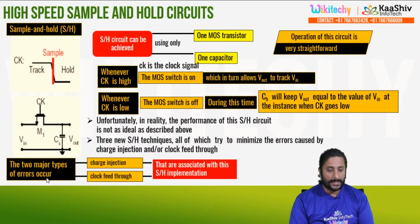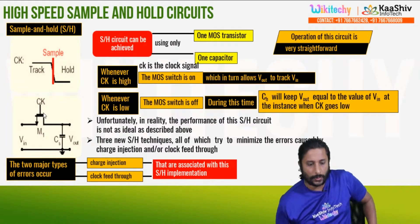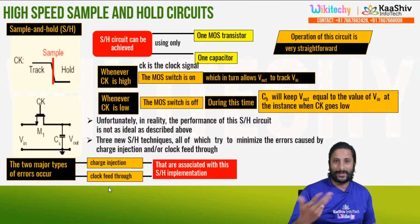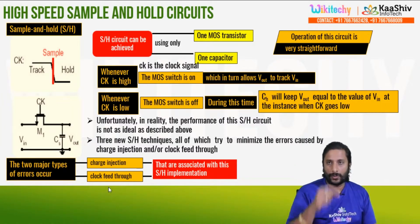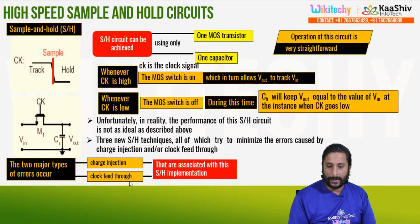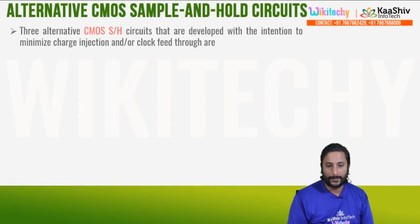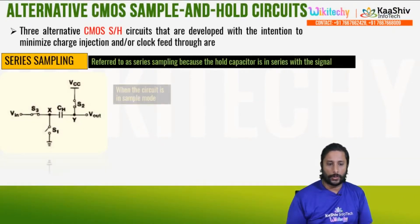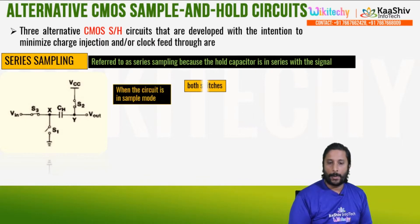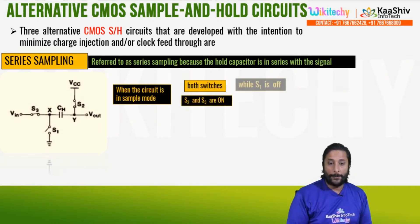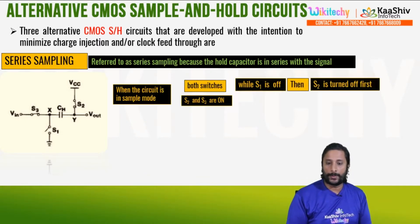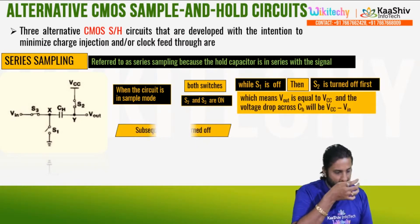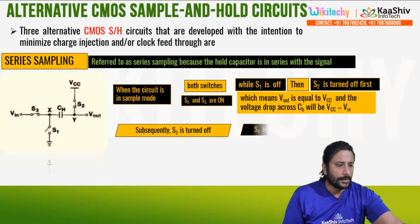There are two major errors in sample and hold circuits: charge injection and clock feedthrough. The clock signal turn-off timing causes these errors. Three alternative CMOS sample and hold circuits are developed to minimize charge injection and clock feedthrough. One approach is series sampling.